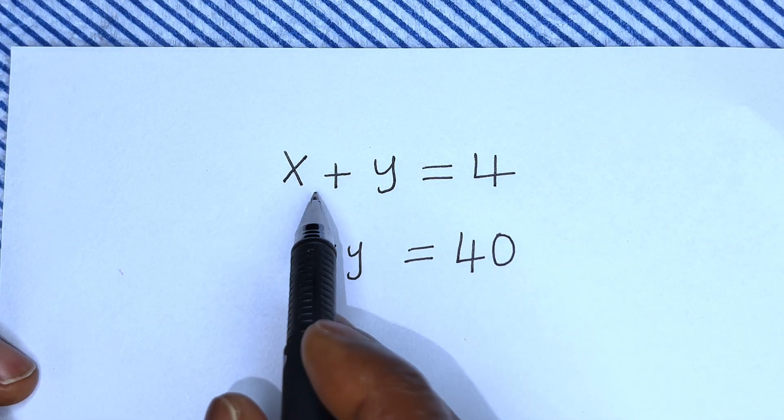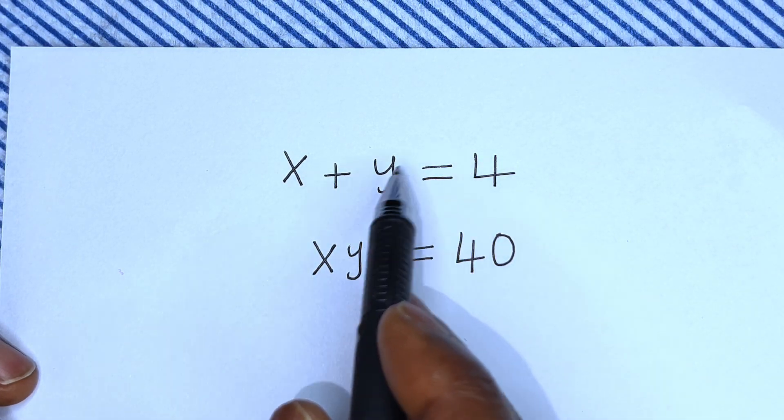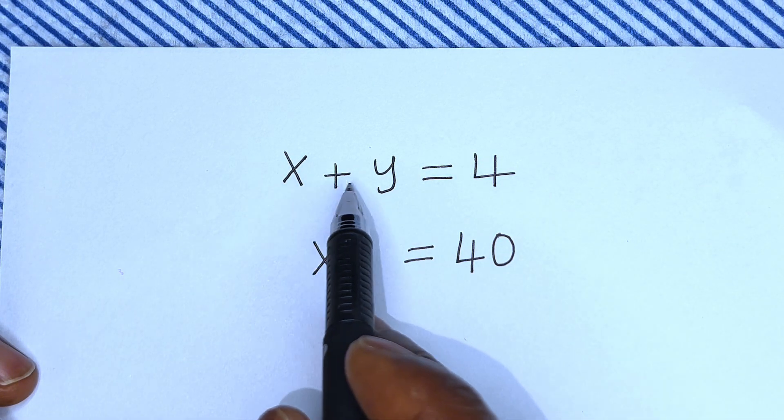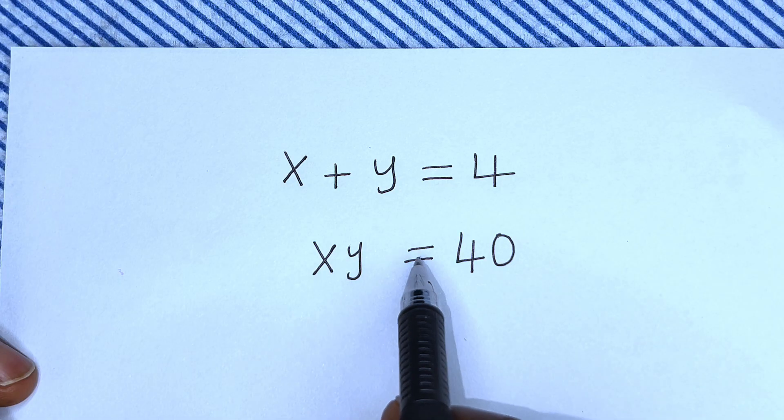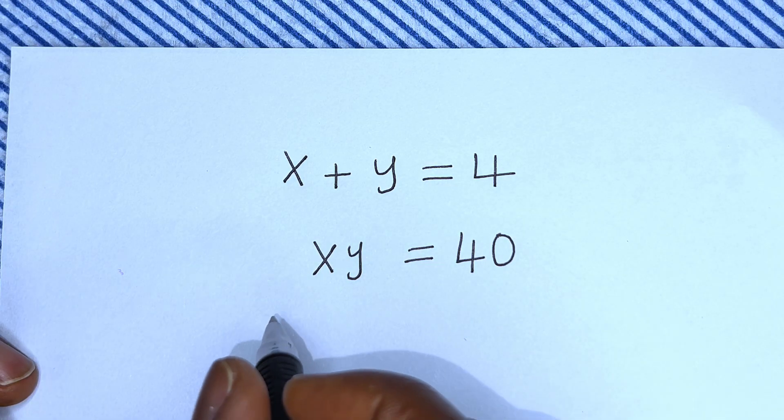Hello. How to solve for x and y in this equation: x plus y is equal to 4, and xy is equal to 40.